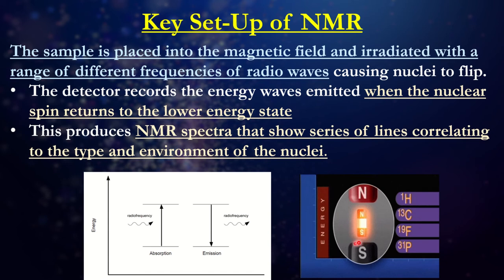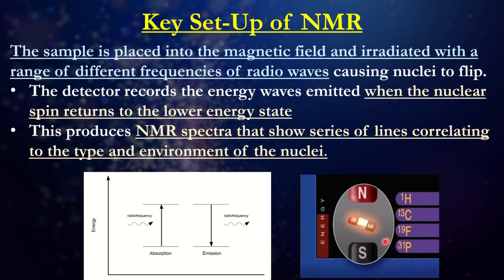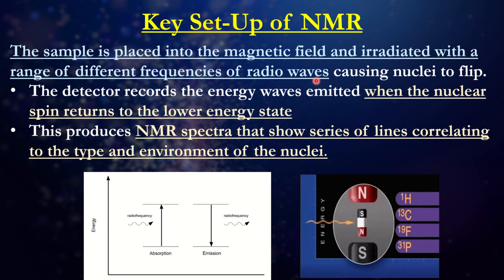Looking at the general structure of NMR: we have really powerful electromagnets, which use electricity to generate magnetic fields. We have a radio frequency generator that produces the radio waves, and then a detector that indicates the radio waves absorbed by our sample. When the sample is placed in the magnetic field, we irradiate it with different ranges of radio waves, causing nuclei to flip. The detector records the spin from the low or high energy state, and whatever peaks appear correlate with the type and environment of the nuclei.